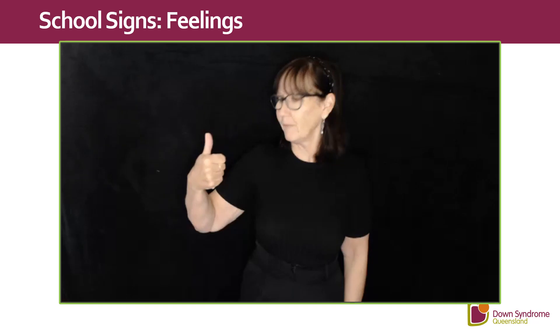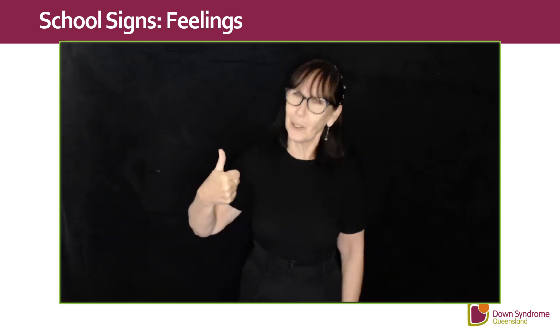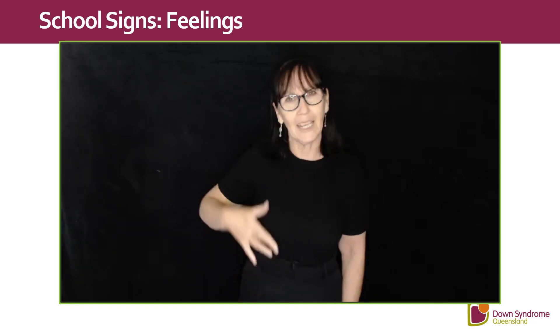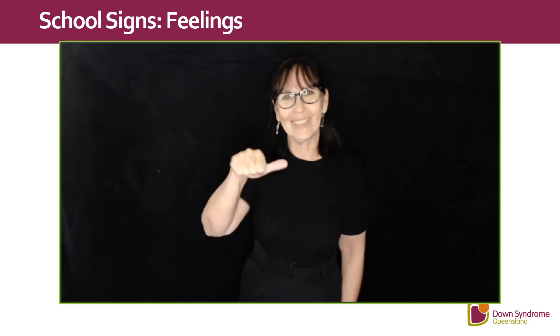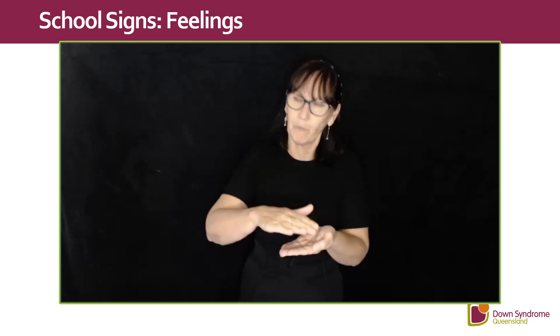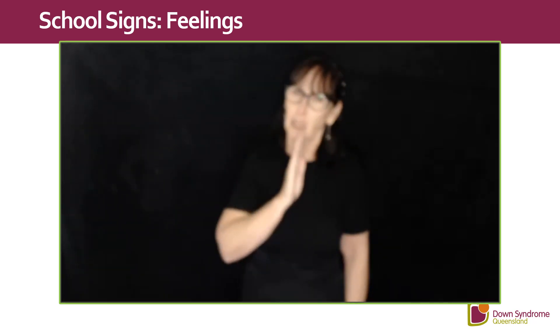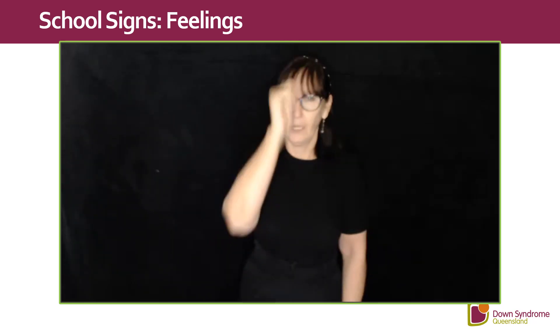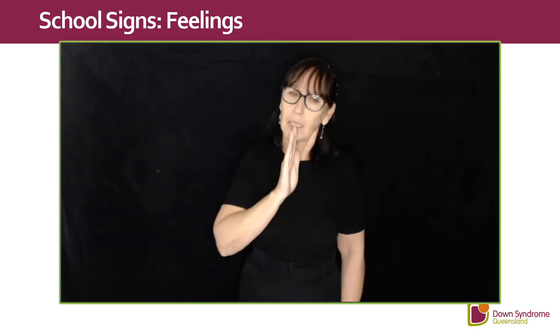Now let's do some signing about feelings. How are you? Flat hand across the chest into a good sign — use a questioning look on your face. Feeling: middle finger stroked up your side. Okay: good sign on the side. Happy: like a backwards H movement but clapping — make sure your expression is happy.